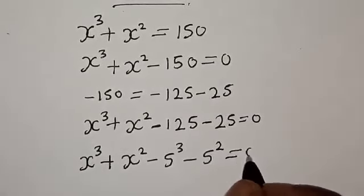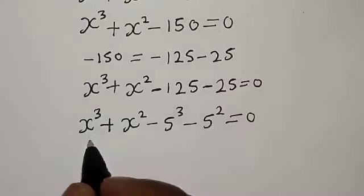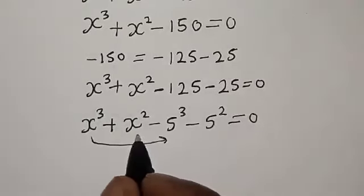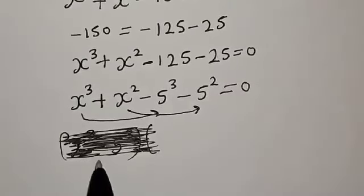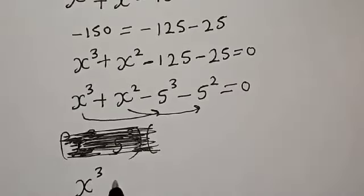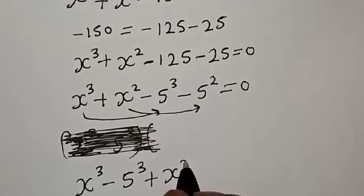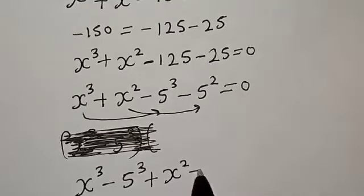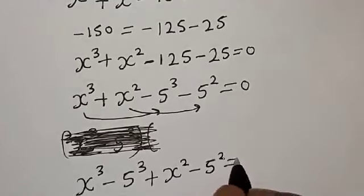By comparing, we can group the terms: s raised to power 3 minus 5 raised to power 3, plus s squared minus 5 squared, is equal to 0.